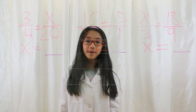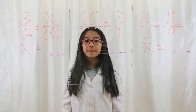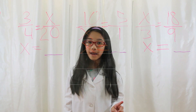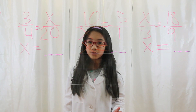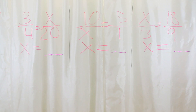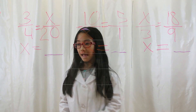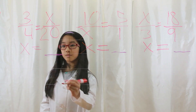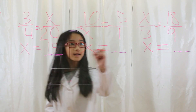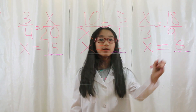Now that you have learned how to do ratio proportion, I want you to do all three problems by yourself. I will be right back — please pause this video to do these problems. If you said that the answers to these problems were 15, 2, and 6, you are a genius!